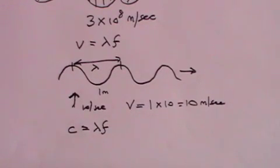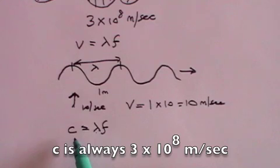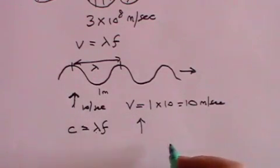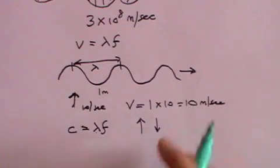And you can have any wavelength you like, but of course the frequency will be determined such that the multiplication of wavelength by frequency must always equal c. So as the wavelength goes up, the frequency comes down.